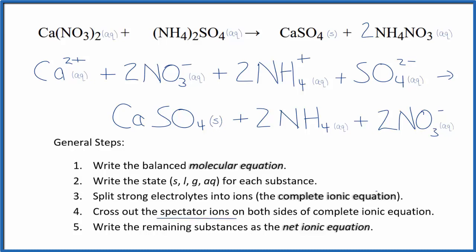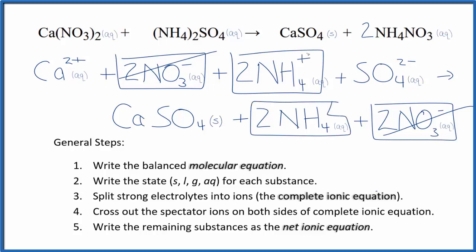Now we can cross out spectator ions. They're on both sides of the complete ionic equation. So we have our reactants on the top, products on the bottom. I can see there are two nitrate ions on the top, and here again in the products. So cross those out. In the reactants, two ammonium ions, and in the products. These are spectator ions. We cross these out. What's left is the net ionic equation for calcium nitrate plus ammonium sulfate. Let's remove these spectator ions.